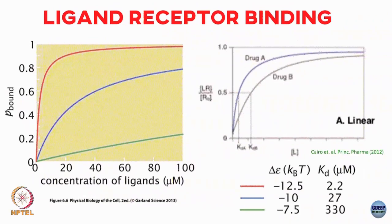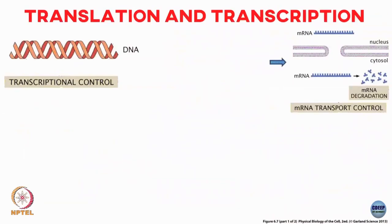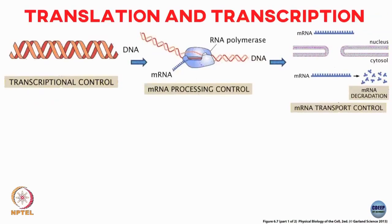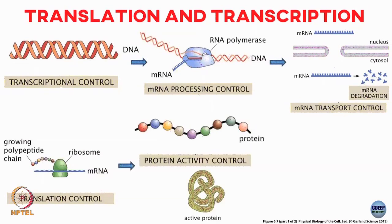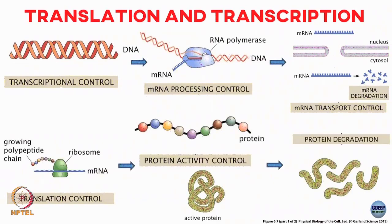This is just an example for ligand-receptor binding. You can use a similar approach for different problems. For example, let me come back to this RNA polymerase problem.